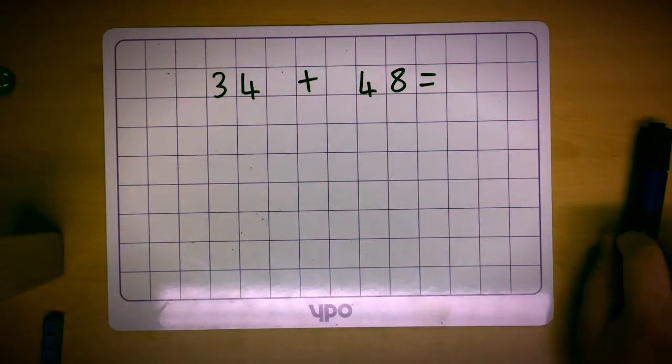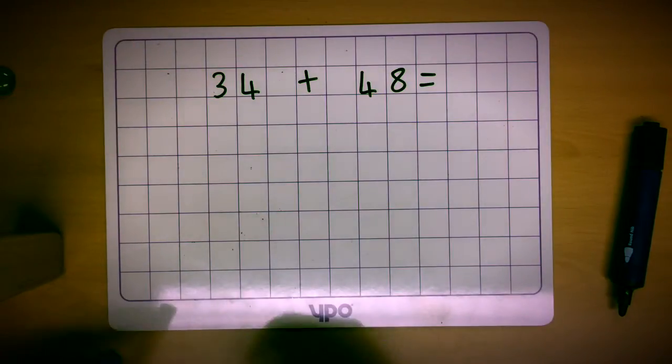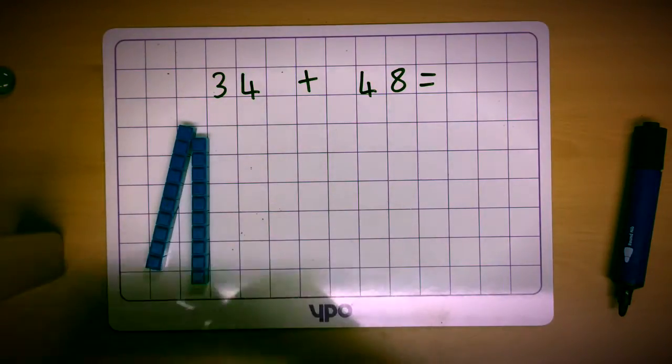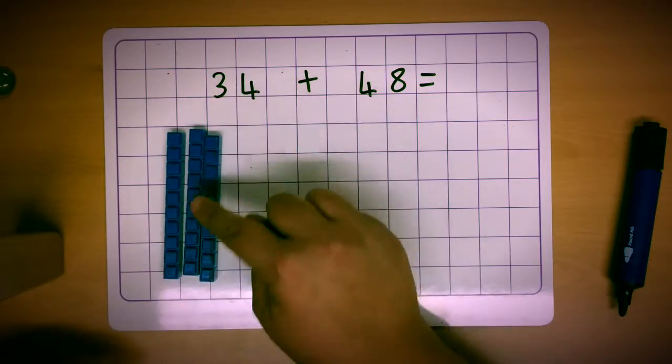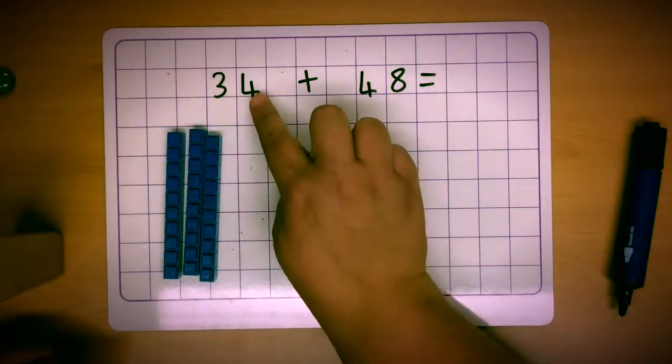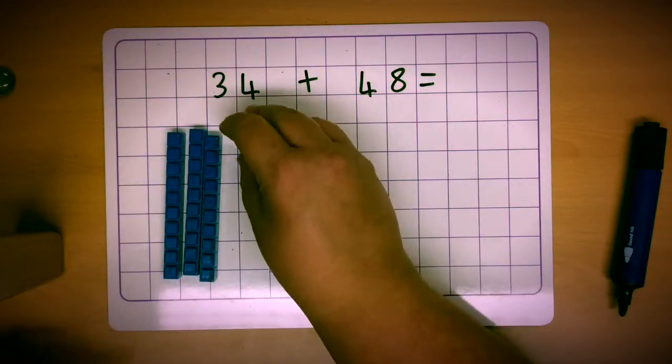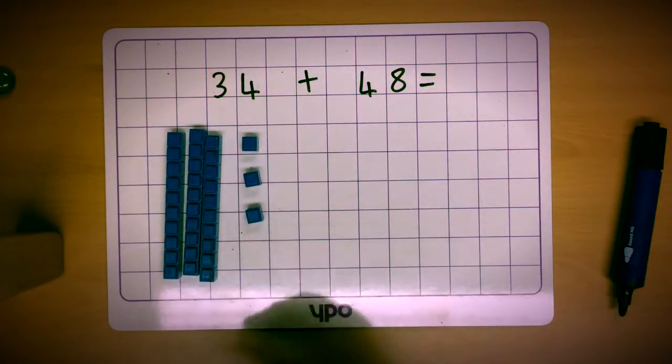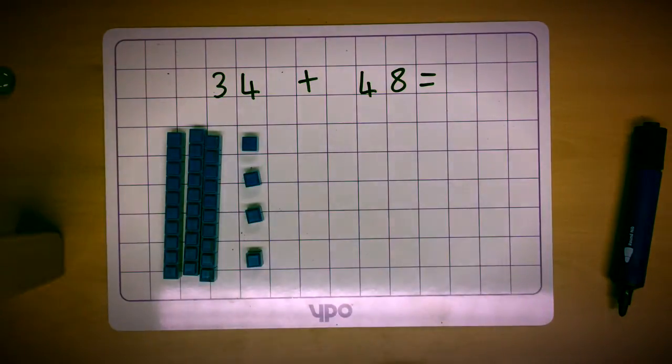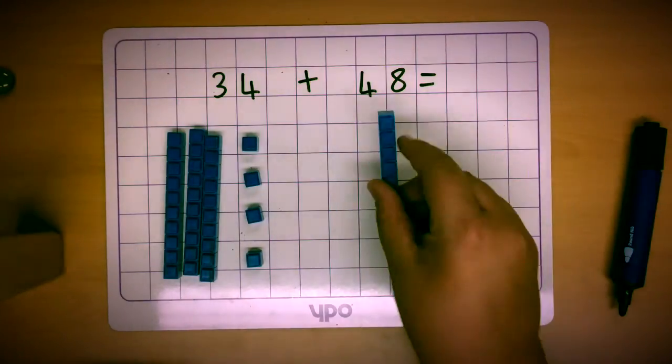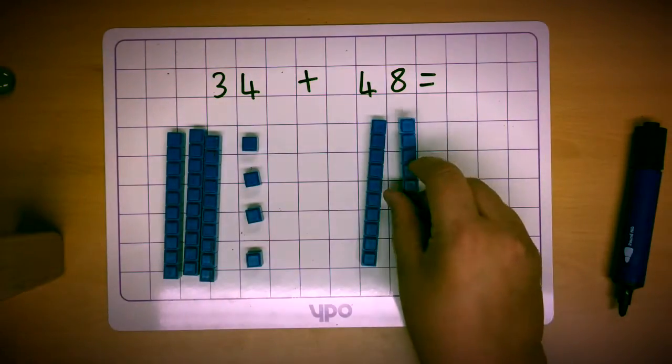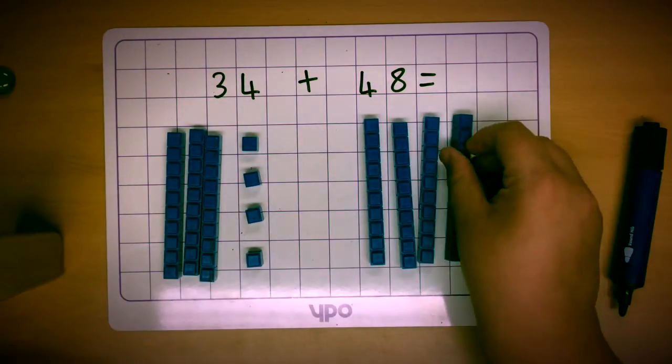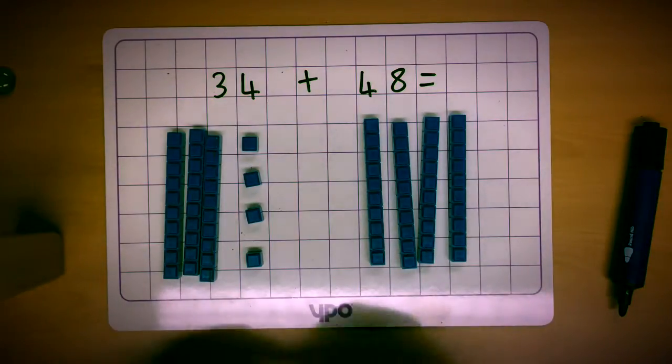The children will be expected to begin by making these numbers using the base ten equipment. 10, 20, 30. They can see that they're going to need three ten sticks to make 30. They're then going to need to have four of the little individual cubes to make the whole number 34. They will also make the other number in this case 48 by getting the ten sticks first of all. They'll need four of those and eight small individual cubes.